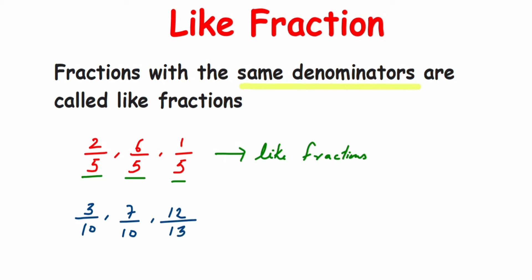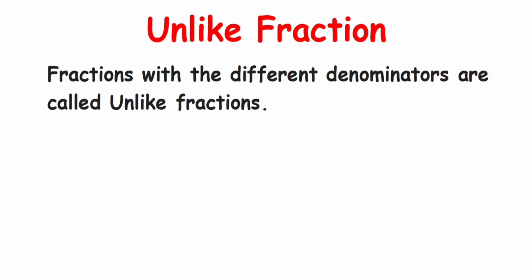But suppose I take 12/13 — then it is not a like fraction with the others. So 3/10 and 7/10 are like fractions, but if I take all three together, they become unlike fractions. Unlike fractions are fractions with different denominators — if the denominators are different, that set of fractions is called unlike fractions.